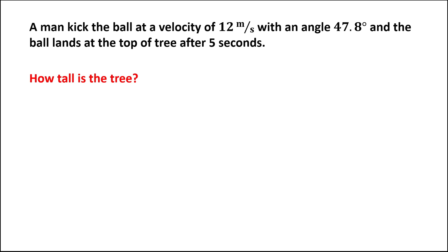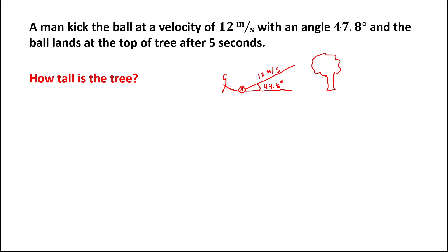For this problem, a man kicked the ball at a velocity of 12 meters per second, with an angle of 47.8 degrees. The ball lands at the top of the tree after 5 seconds. We need to find the height of the tree — how tall is the tree?